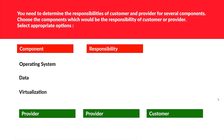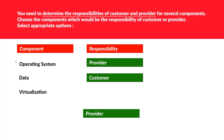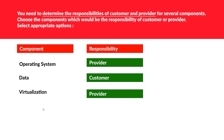The next question is another matching type. You need to determine the responsibilities of a customer and a provider for the components below. Operating system — this is the responsibility of the provider. Data — data is obviously the customer's responsibility, because the customer decides whether to encrypt it or not. Virtualization — the customer does not have power over virtualization; this is the provider's responsibility. So these are the correct sets for this question.